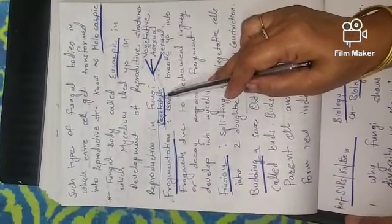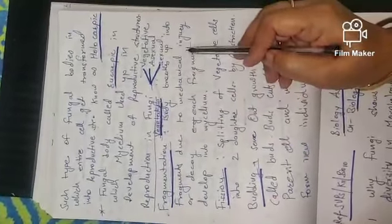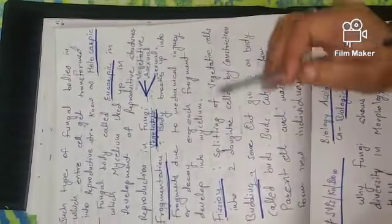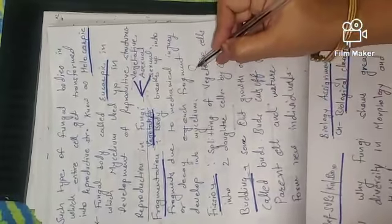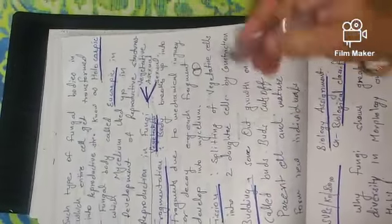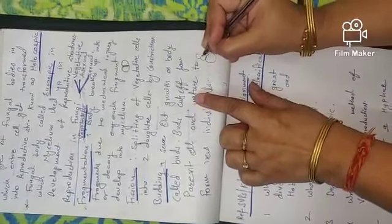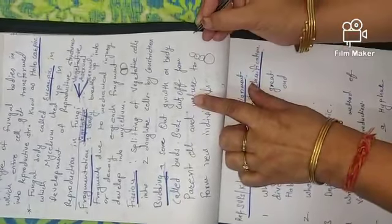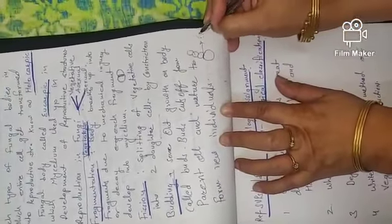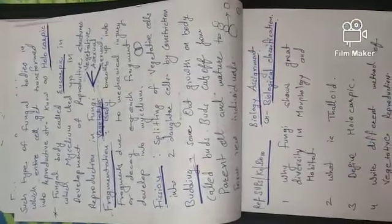Vegetative reproduction: Fragmentation means body breaks up into 2-3 parts, and each part develops into a new fungus. Fission means one cell breaks up into two. Budding is an outgrowth, where it keeps growing in a chain of buds. As it grows, the bud separates out and each develops into a new yeast.